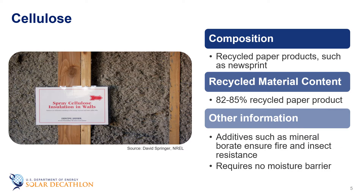Cellulose insulation is made from recycled paper products, primarily newsprint, and it has a very high recycled content, generally 82 to 85 percent. The paper is first reduced to small pieces and then fiberized, creating a product that packs tightly into building cavities and inhibits airflow. Manufacturers add the mineral borate, sometimes blended with the less costly ammonium sulfate, to ensure fire and insect resistance. Cellulose insulation typically requires no moisture barrier, and when installed at the proper densities, cannot settle in a building cavity.